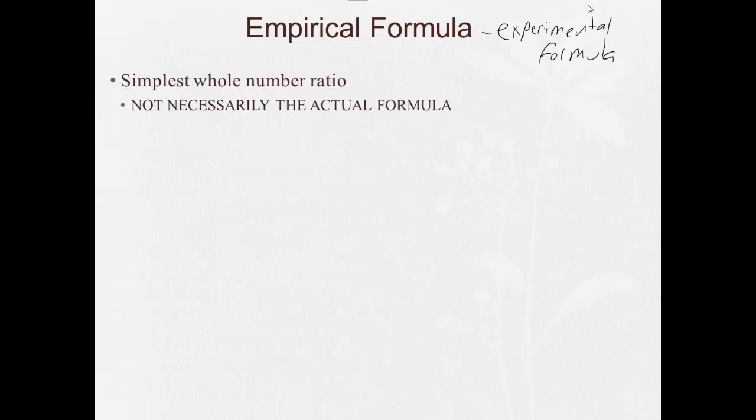Another type of formula is what's called an empirical formula. The way I used to remember this when I was in school: an empirical formula is kind of like an experimental formula. Basically it gives the simplest whole number ratio of one element to another or to the other elements. It's not necessarily going to be the actual formula.